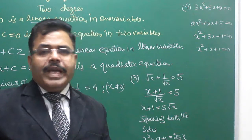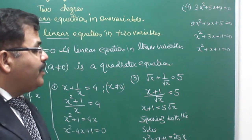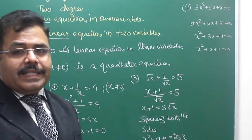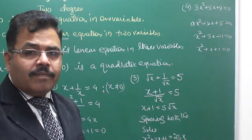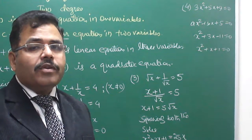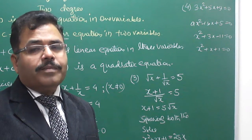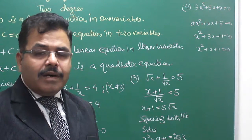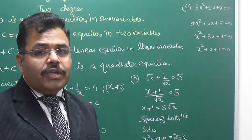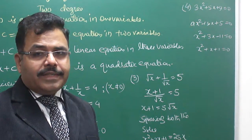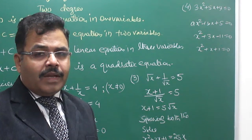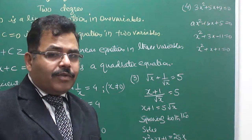Some more examples: 3x² plus 5x plus 9 equals 0, ax² plus bx plus 5 equals 0, x² plus 3x minus 11 equals 0, x² plus x plus 1 equals 0 — all of these are quadratic equations. Now we have to find the value of x, which is called the root of the equation or the zero of the equation.